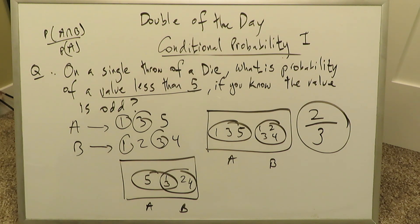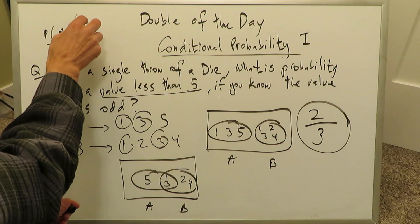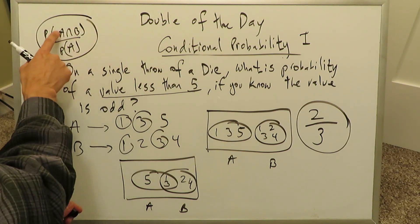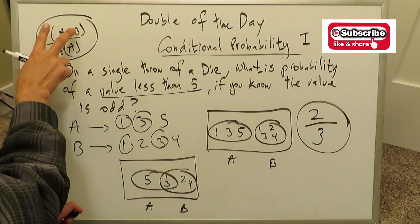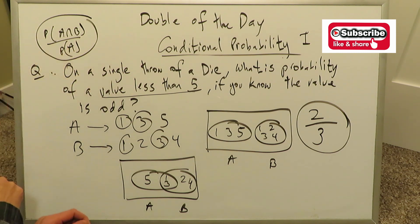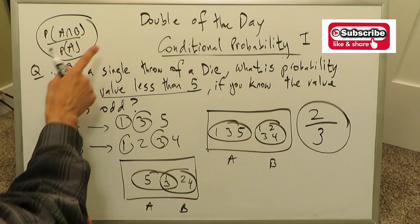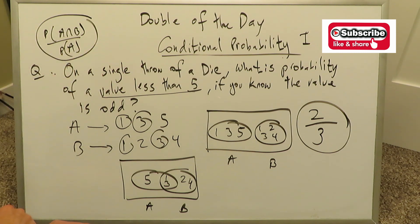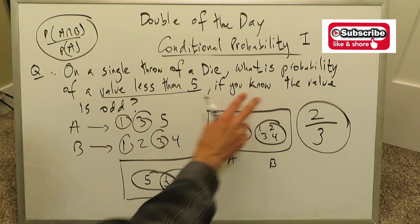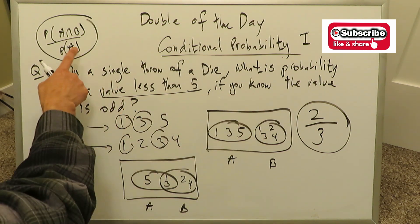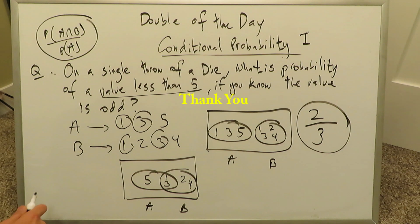Looking at two questions may not be enough, but we will present another video with two more, and if needed, a few more videos on conditional probability. Remember, the formula is the probability of intersection of event A and B, divided by the probability of event A. Event A is the event that has occurred — the information you already know prior to determining event B. Thank you for watching. Stay tuned. Have a nice day.